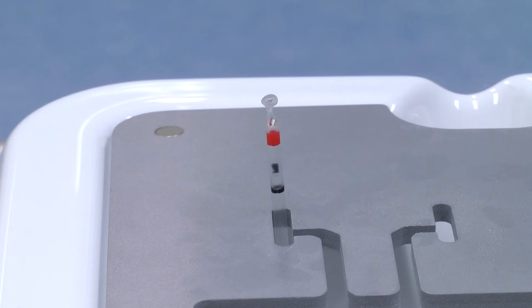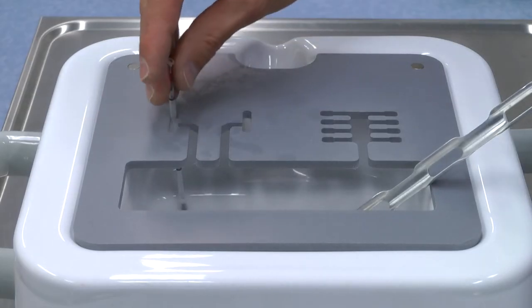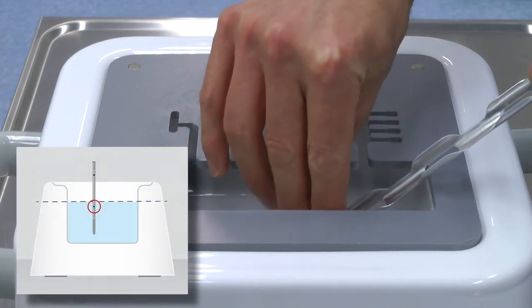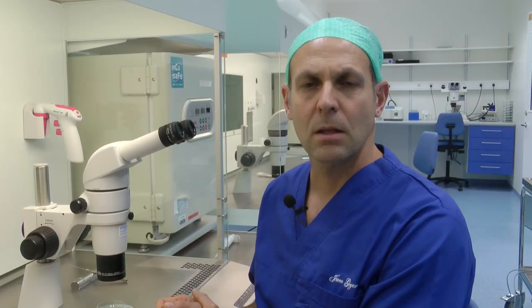When you've finished, inspect the seal to make sure it has been performed correctly. You can now move the sealed straw into your cryocane. The lowest black mark of the RapidStraw must always be submerged in liquid nitrogen. The cryocane can now be transferred to your long-term storage tanks according to your own protocols.